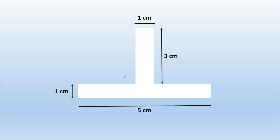Now we are going to solve a numerical problem of locating the centroid of a composite figure. An inverted T-section is given. The thickness of both rectangular sections is 1 centimeter, the height of the vertical section is 3 centimeters, and the width of the horizontal section is 5 centimeters. Using the steps discussed, we will calculate the centroid of this figure.